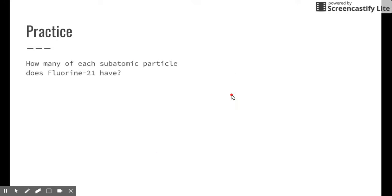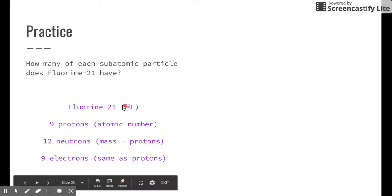Here's a little bit of practice. How many of each subatomic particles does fluorine-21 have? I recommend that you pause the video and see if you can answer this question. But I'm going to go ahead and go through it. Fluorine-21, I can write fluorine-21 like this, or I can write it as an isotope symbol like this. But fluorine-21 has nine protons, 12 neutrons, and nine electrons. Nine protons because I look on the periodic table, 12 neutrons because I take that mass of 21 and minus the protons, and then finally nine electrons because they cancel out those protons.